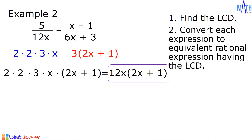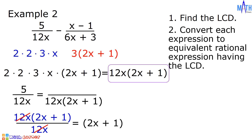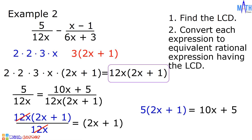Let us convert 5 over 12x into an equivalent rational expression having the LCD. 12x times quantity 2x plus 1 divided by 12x is equal to 2x plus 1. Next, 2x plus 1 multiplied by 5 is equal to 10x plus 5. And the numerator is equal to 10x plus 5.